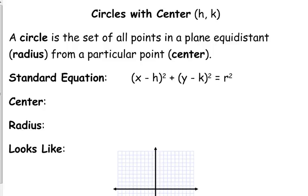The center is going to be hk. I mentioned that last week. You've got to change the signs when you take it out of the equation. The radius is the square root of r squared. I know obviously that equals r, but I make that distinction because people would tend to forget to take the square root. I don't know why I put 69, 69 is not a perfect square, 64.